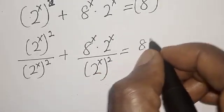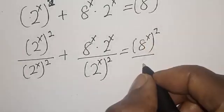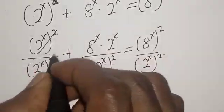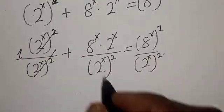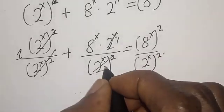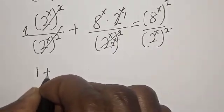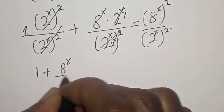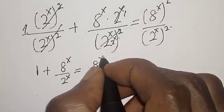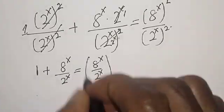In this term we cancel this — that gives 1. Then here we cancel this and we have 2 raised to power x. Now we have 1 plus 8 raised to power x over 2 raised to power s, is equal to 8 raised to power x over 2 raised to power s, all squared.